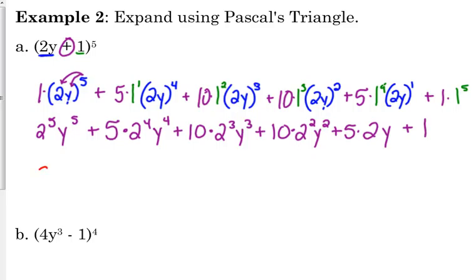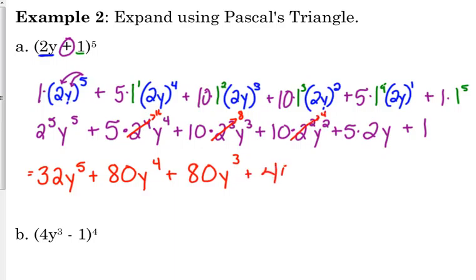So 2 to the 5th is 32, so we've got 32y to the 5th, plus 2 to the 4th is 16, 5 times 16 is 80, y to the 4th, plus 2 cubed is 8, 10 times 8 is 80, y cubed, plus 2 squared is 4, 10 times 4 is 40, 40y squared, 5 times 2 is 10, so we've got 10y, and we've got plus 1 at the end. So that is our final answer.